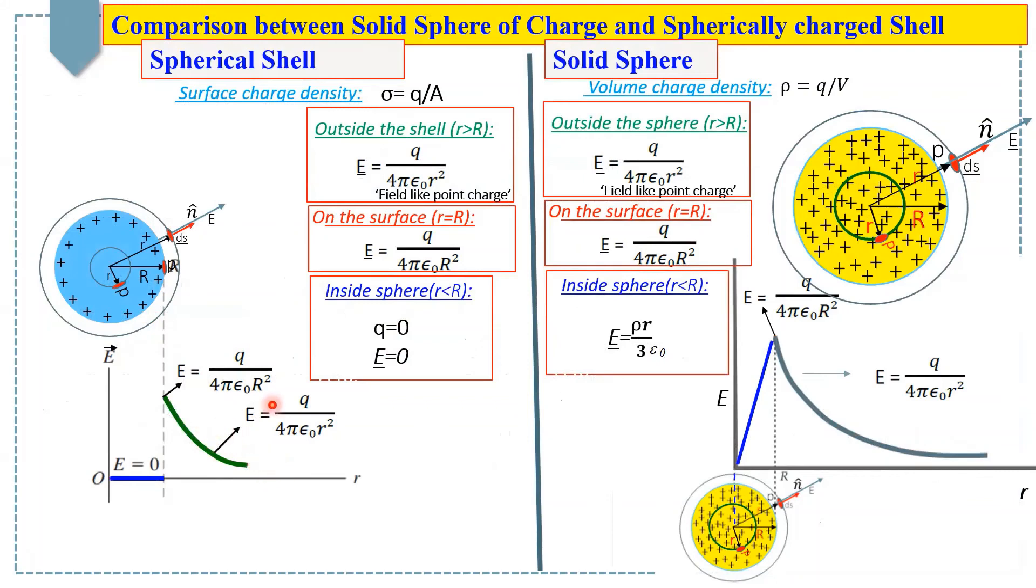Only inside there are differences. Inside shell, there is no charge, so no electric field. And inside the sphere, first electric field is zero at the center, but after that it increases linearly with respect to radius and then decreases while moving away from the surface of the sphere.